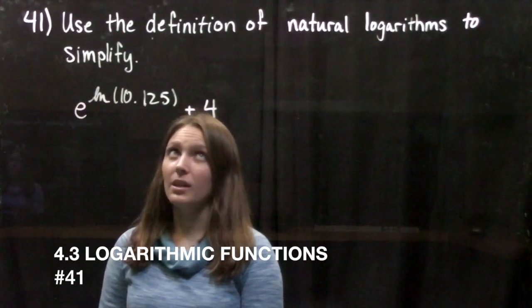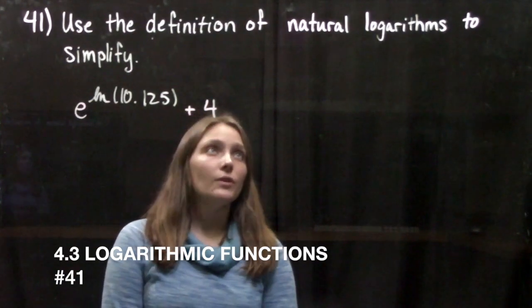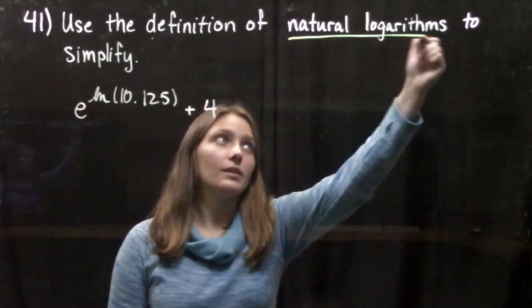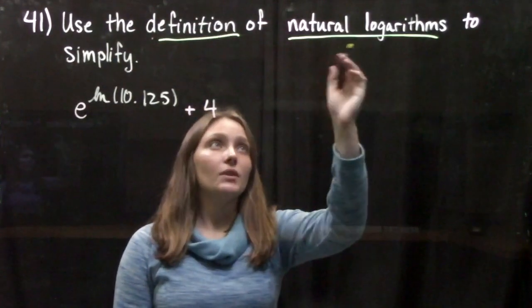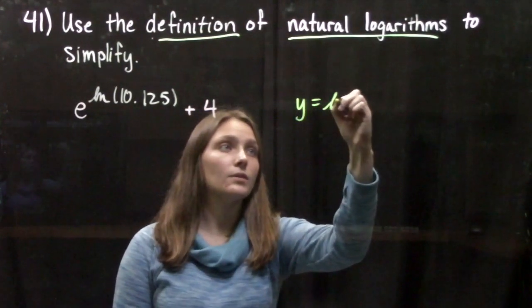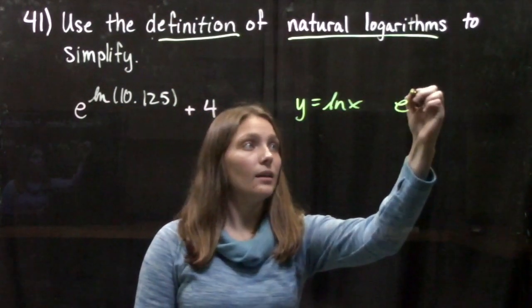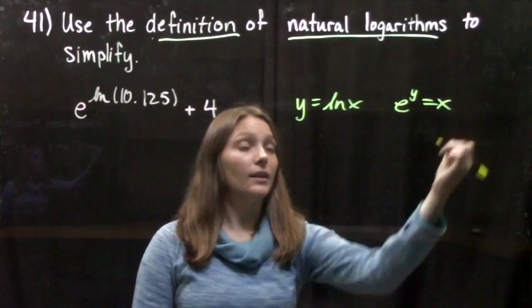We're doing number 41 which says use the definition of natural logarithms to simplify. So first off, what's the definition of natural logarithms? The definition says that y equals the natural log of x is the same thing as saying e to the y equals x.